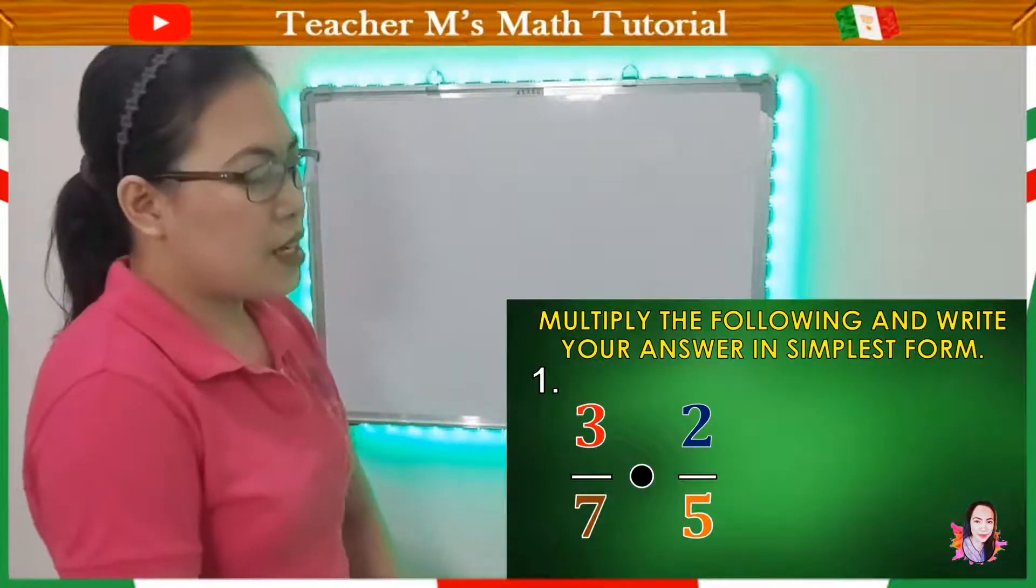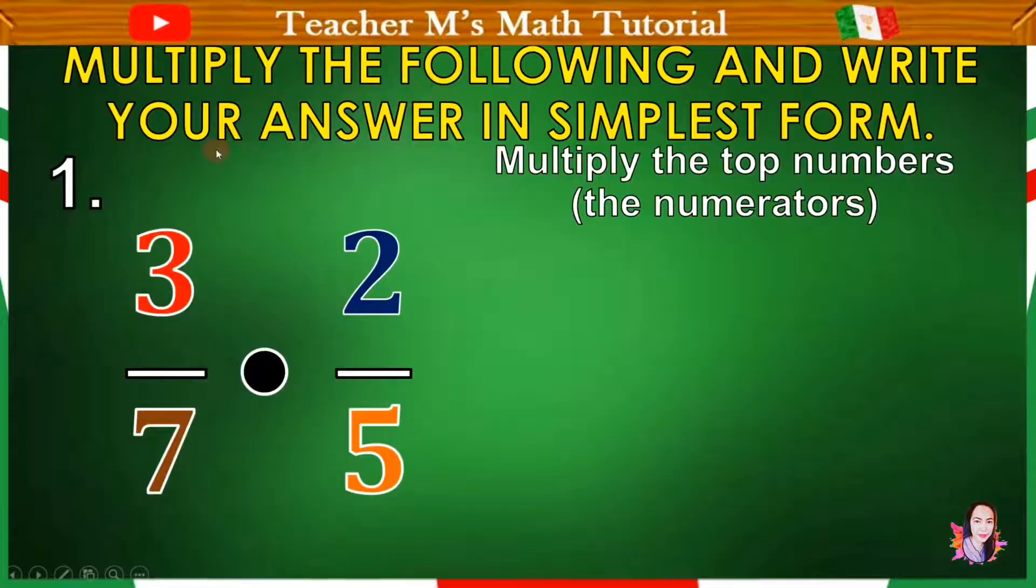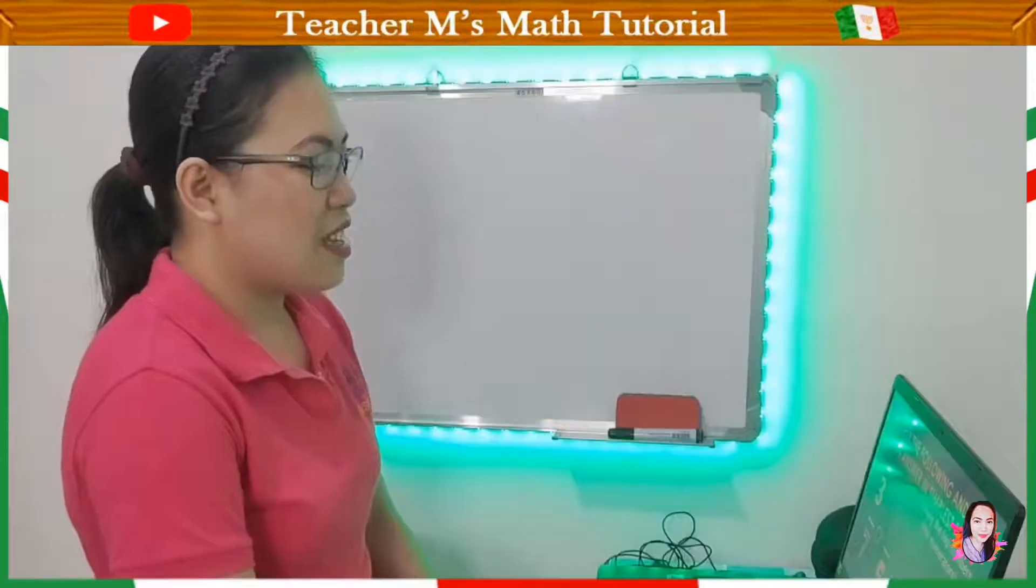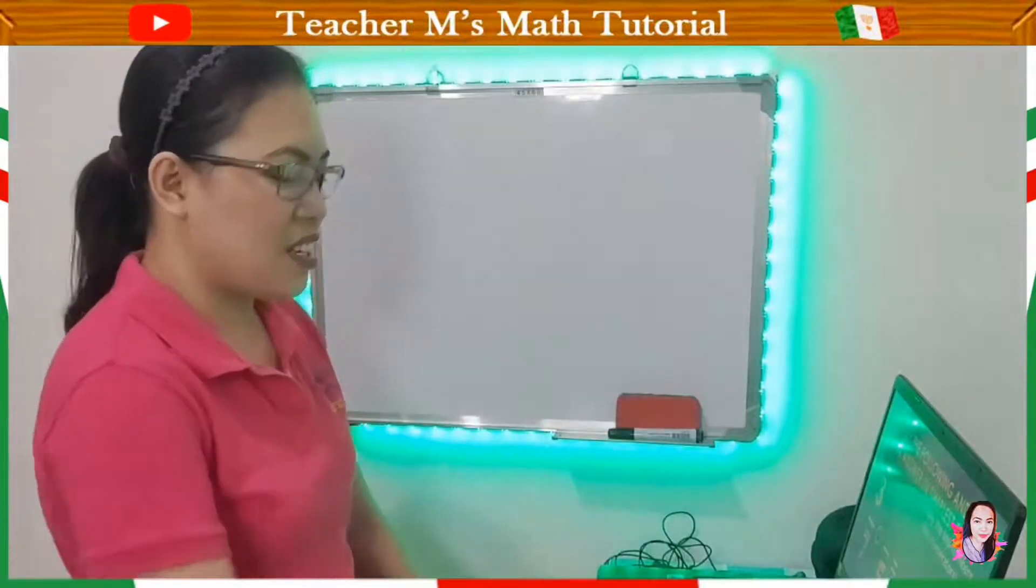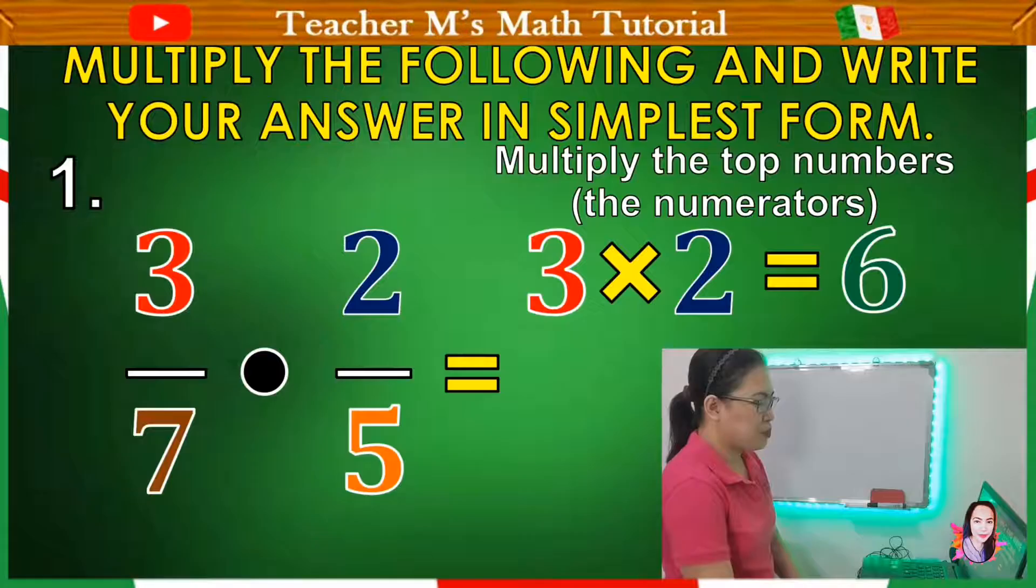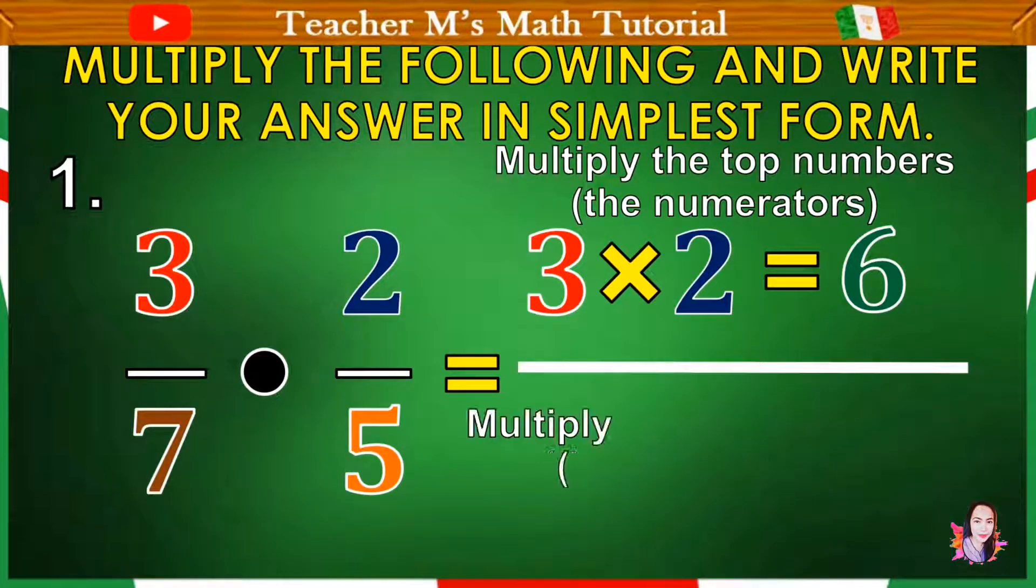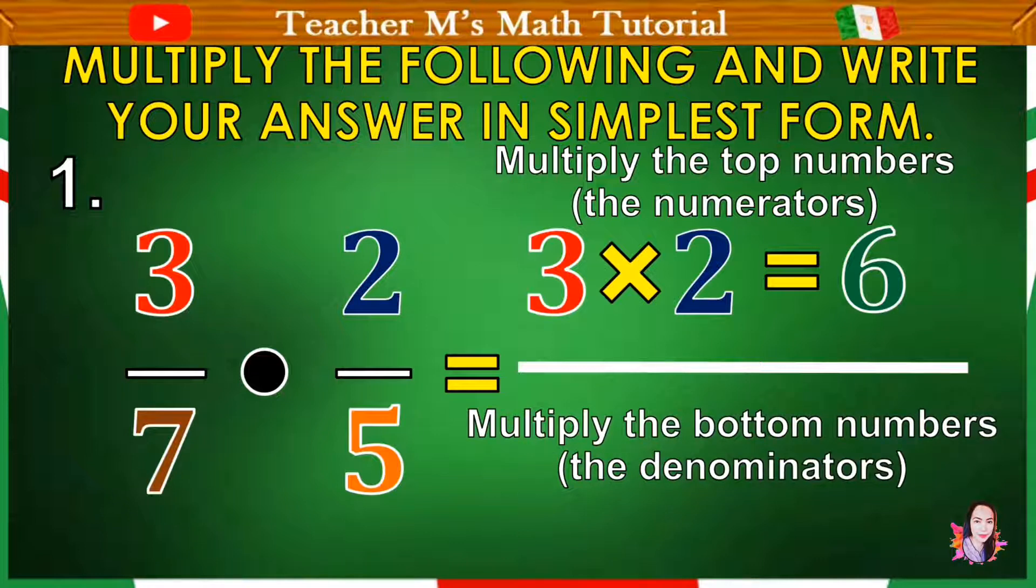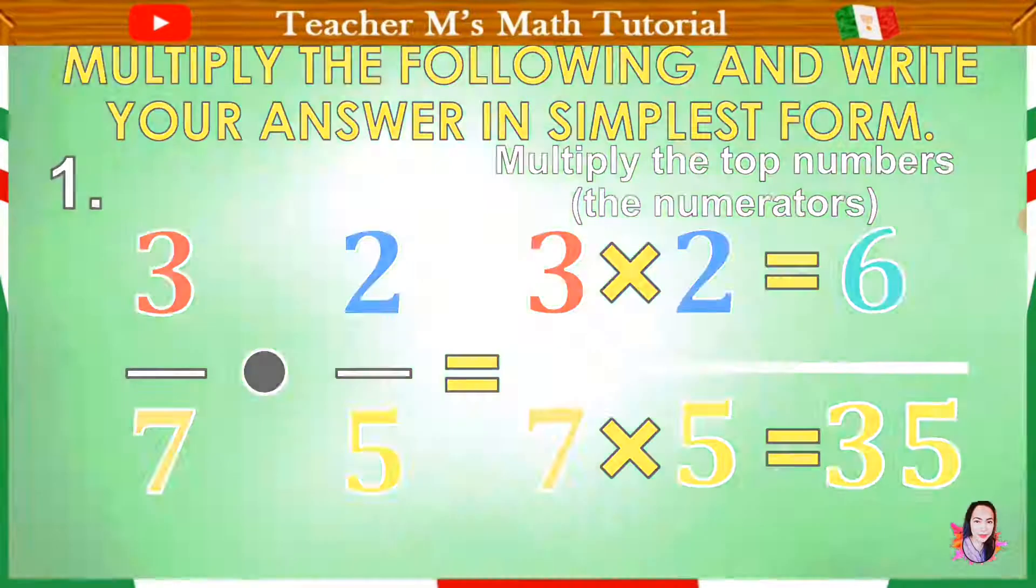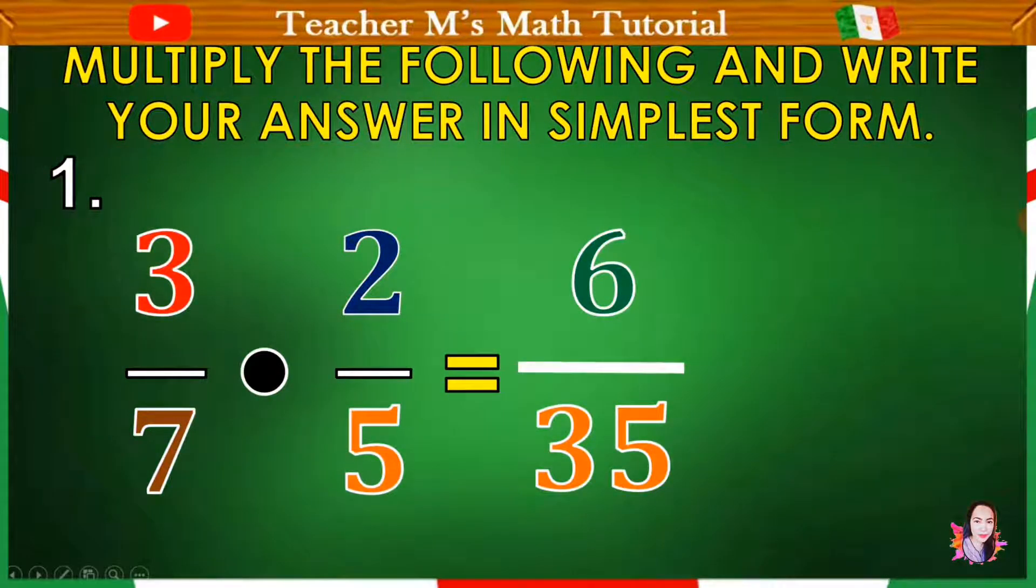3 over 7 times 2 over 5. The top numbers or the numerators are 3 and 2. Okay, multiply natin. 3 times 2. Okay, 3 times 2 equals 6.